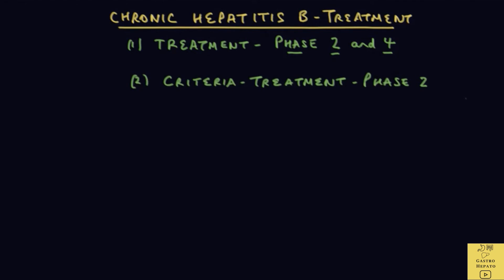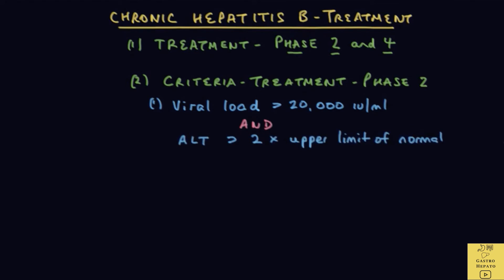Let's now look at the criteria for treatment for patients in phase 2. Treatment is given if the viral load is more than 20,000 IU per ml — viral load meaning the amount of hepatitis B virus in a given quantity of blood, with a high viral load indicating a high rate of multiplication. The additional factor is that the liver enzyme ALT must be more than twice the upper limit of normal: that is, more than 70 units per liter for males and more than 50 units per liter for females, provided the viral load is also more than 20,000 IU per ml.